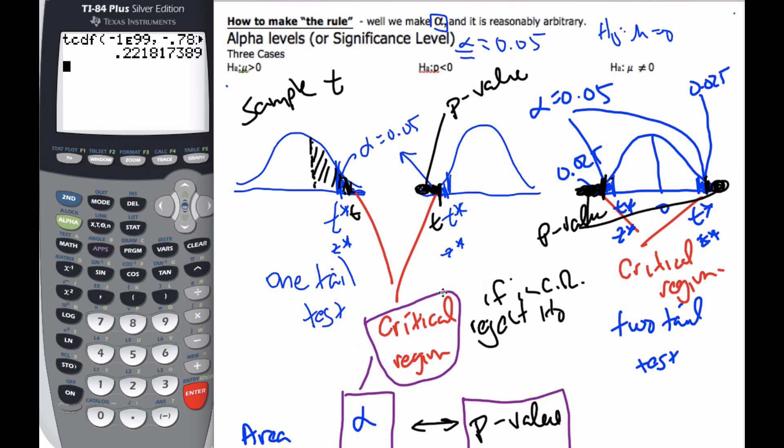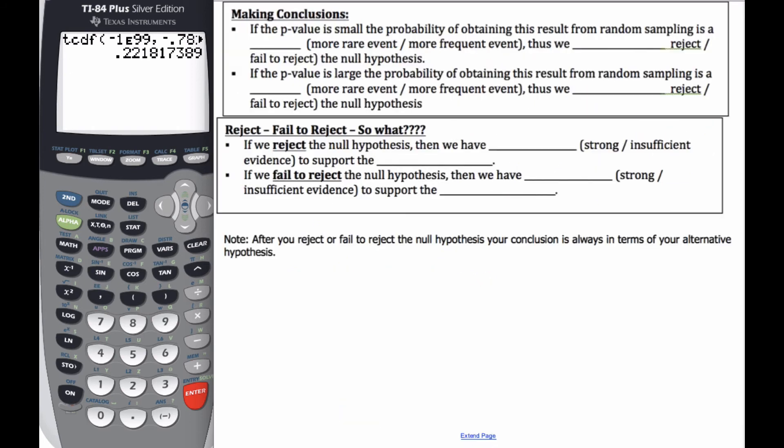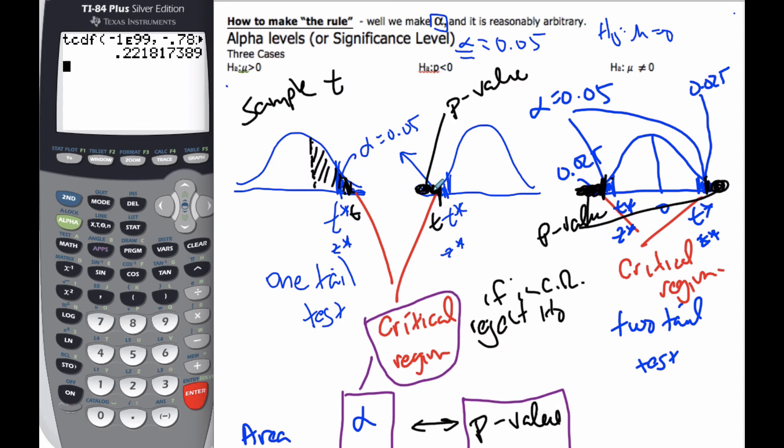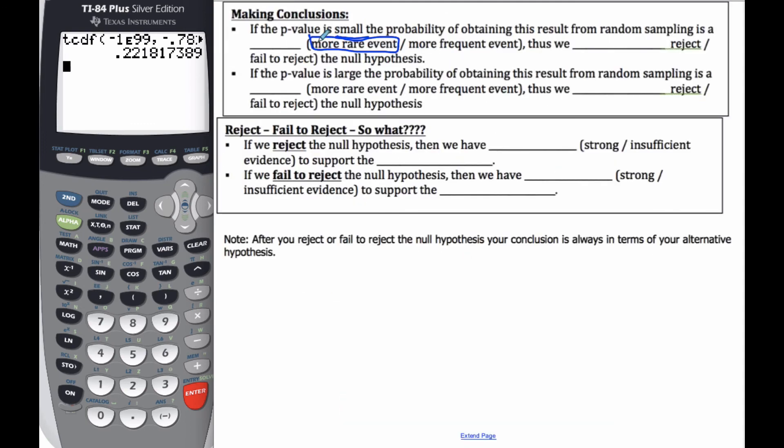Let's do a little bit of making conclusions. So if the p-value is small, the probability of obtaining this result from a random sampling is very rare, is more rare. It's very unexpected. If p is small, if p is small, that means we're in this region here. This doesn't happen very often. And thus we will reject the null hypothesis.